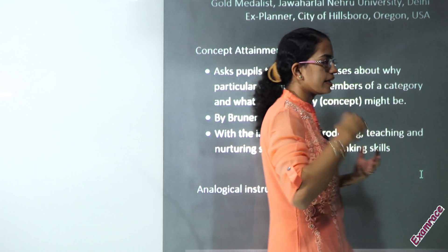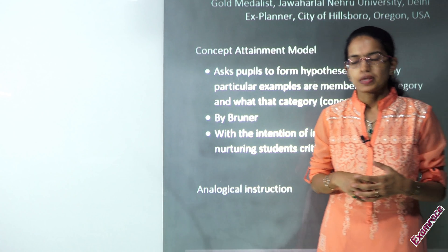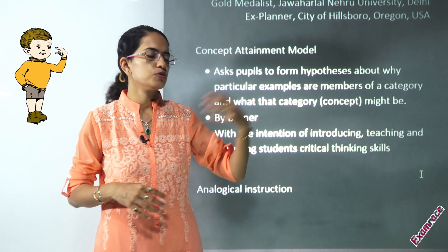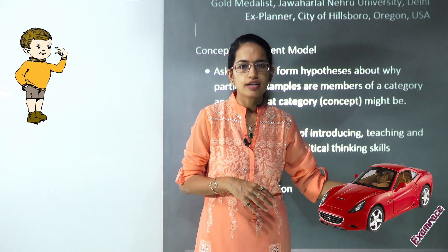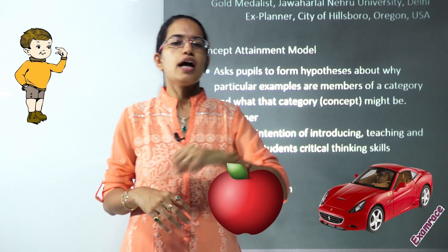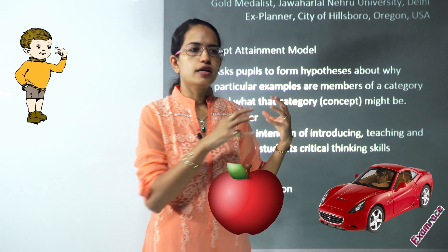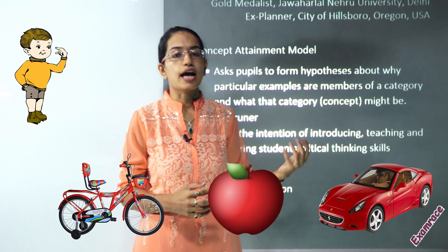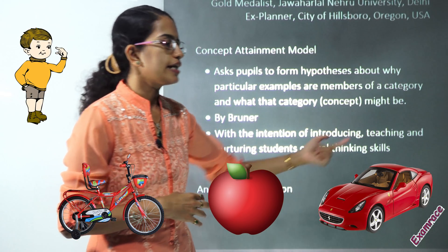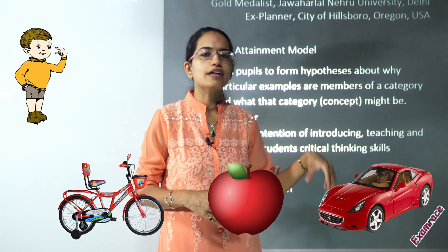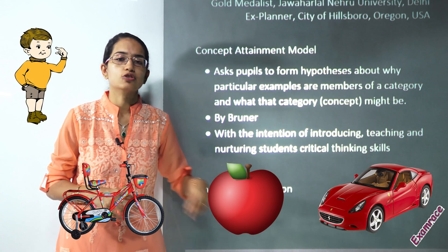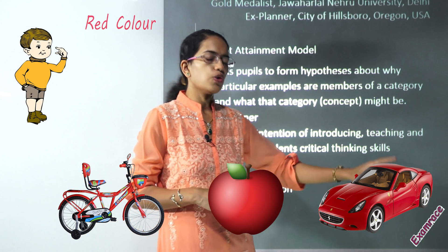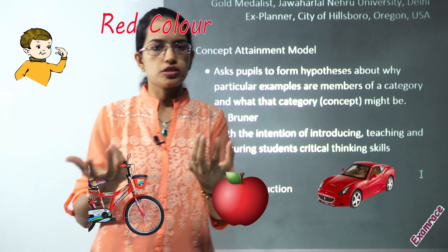The idea was attaining or getting into a concept. With a simple example: there is a child, I introduce a red toy car, a red apple, and a red bicycle. In all three instances, I say red. So the child is now able to associate that we are talking about something common in all three cases — that is red color. So he understands or attains the concept of red.